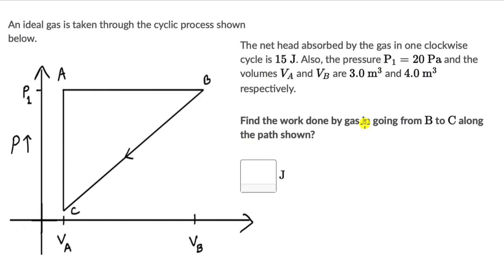Let's solve a question on applications of first law of thermodynamics in a cyclic process. For this one we have an ideal gas which is taken through the cyclic process shown below. We can see that over here. The net heat absorbed by the gas in one clockwise cycle is 15 joules. Also the pressure P₁ is 20 Pa and volume Vₐ and Vᵦ are 3 and 4 respectively. We need to figure out the work done by the gas in going from B to C.